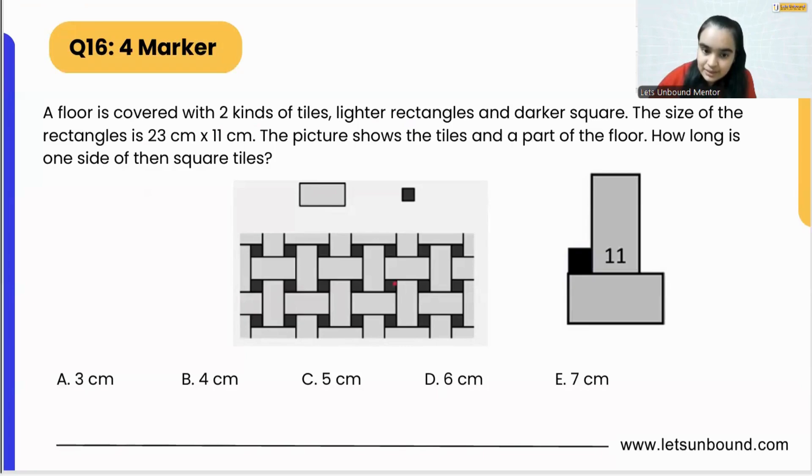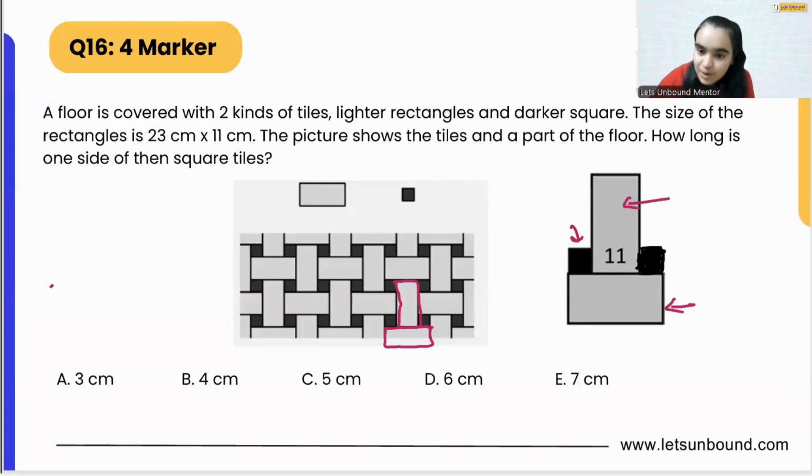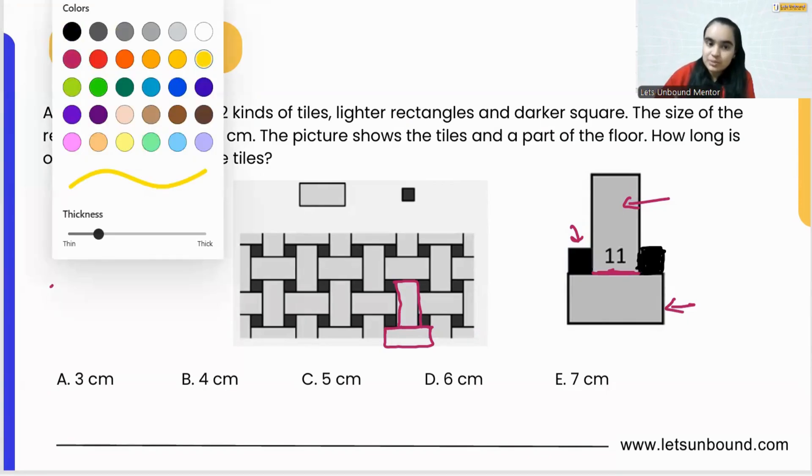It is having a rectangle over here which you can see over here as well. Below this we are having another rectangle which is this one. On this side we are having one square over here and then we will also have another square over here. Now we know the dimensions of the rectangle.